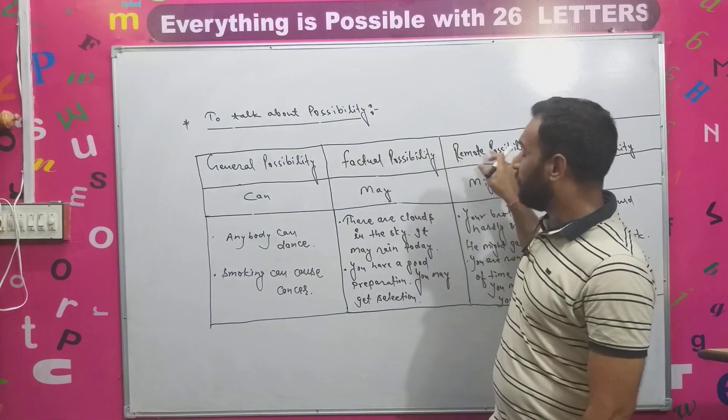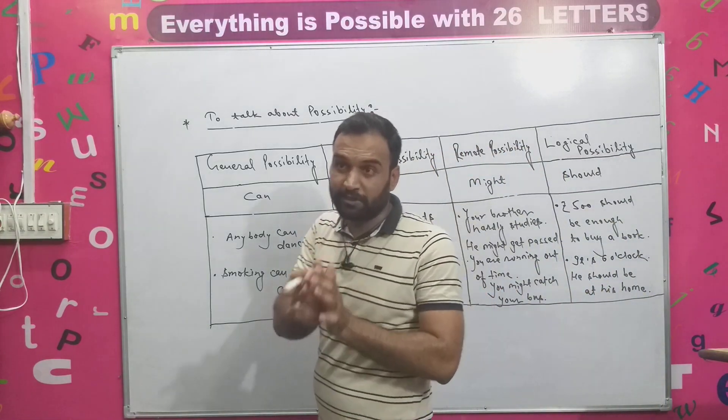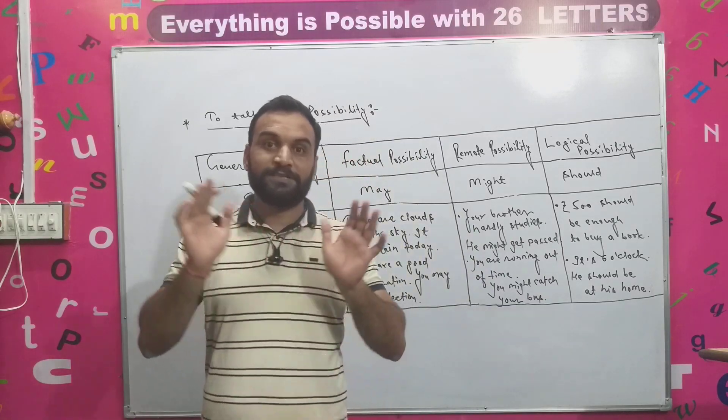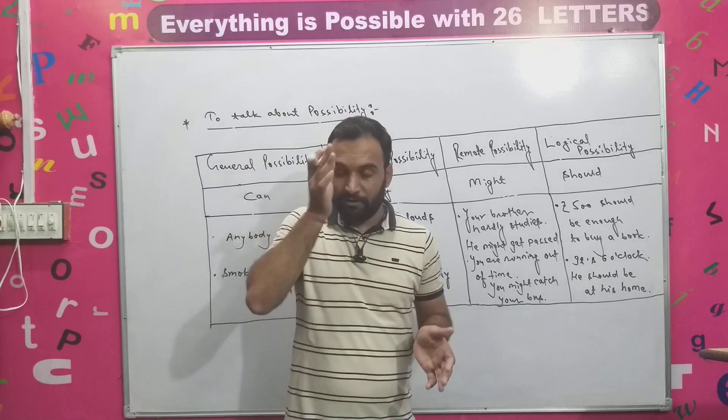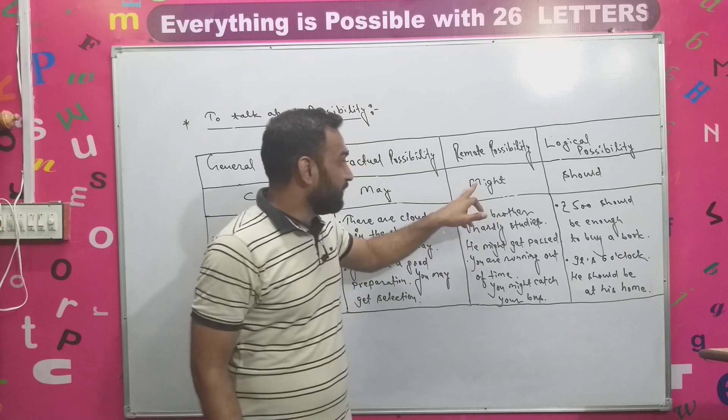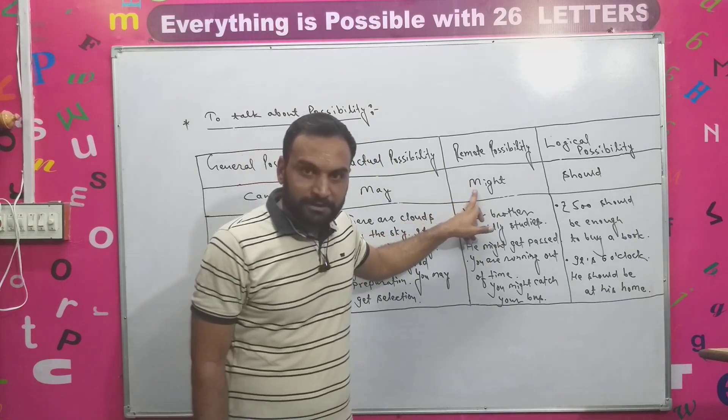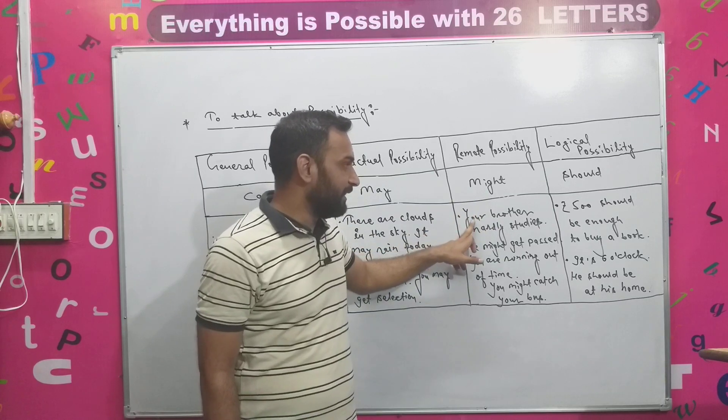And the third is remote possibility. When you are talking about remote possibility, you have to take the help of 'might'. And the examples are,